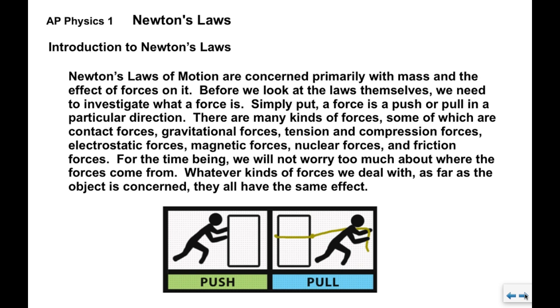Now, the laws of motion are concerned primarily with mass and the effect of forces on it. Before we look at the laws themselves, we need to investigate what a force actually is. Simply put, a force is a push or pull in a particular direction. There are different types of forces: contact forces, gravitational forces, tension and compression, electrostatic, magnetic, nuclear, friction forces. For the time being, we're not going to worry too much about the types of forces. As far as the object and Newton's laws are concerned, all these different types of forces have the same effect.